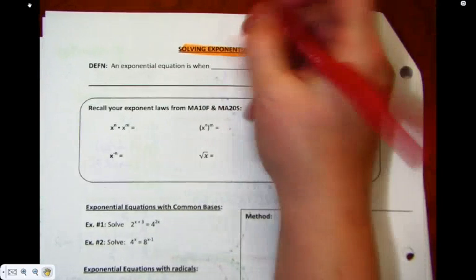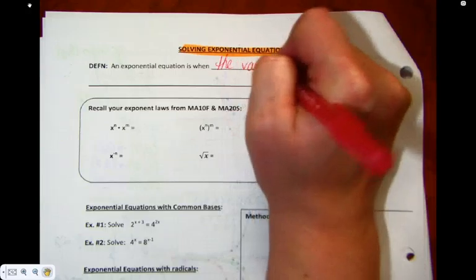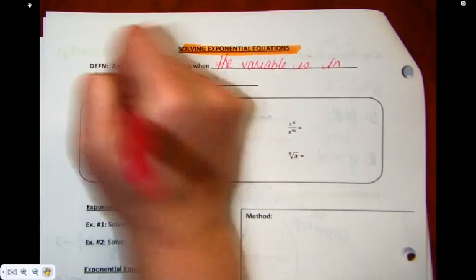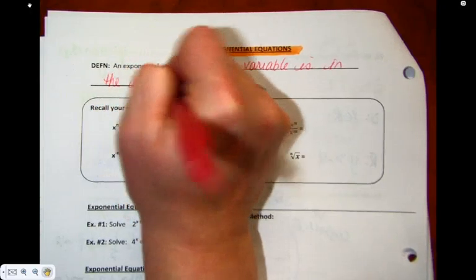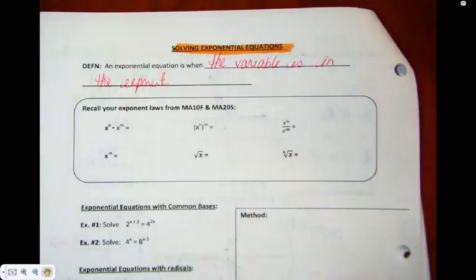The exponential equation is when the variable is in the exponent. I told you last week when we started this unit, that's what this unit is all about - these types of equations where the variable is in the exponent. We're going to start by solving today, then we're going to do about three classes of theory, which will get us into solving different kinds, and then we do the real world applications, and then we're done.